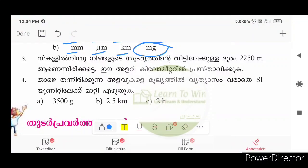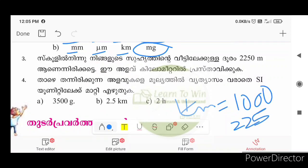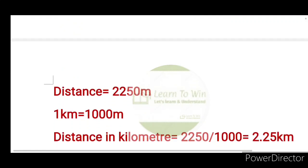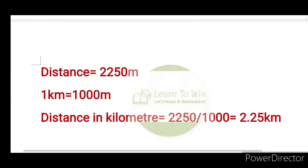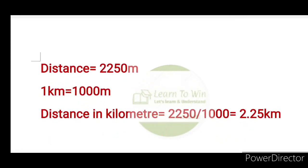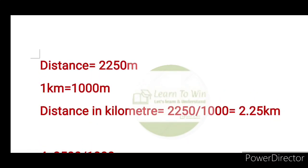1 kilometer is 1,000 meters. The distance is 2,250 meters. So, 2,250 meters divided by 1,000 will be equal to 2.25 kilometers.